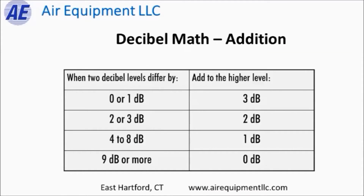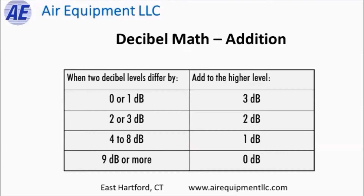Decibel math: when we have multiple noise sources in the same space, we can't just add up their decibel levels. If one is 50 and the other is 49, we can't say the total is 99 decibels — because going from 50 to 100 decibels, being logarithmic, is not doubling the loudness, that's 32 times louder. When combining multiple noise sources, if the difference in noise level is zero or one decibel, you take the louder noise source, add three to it, and that's your net result.